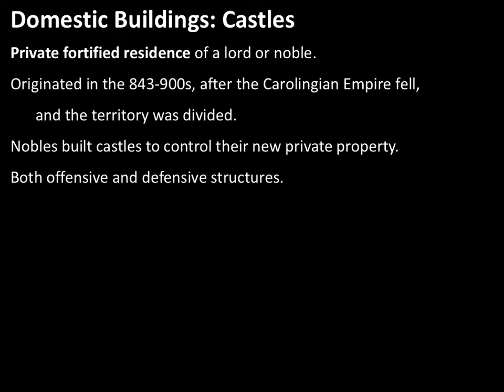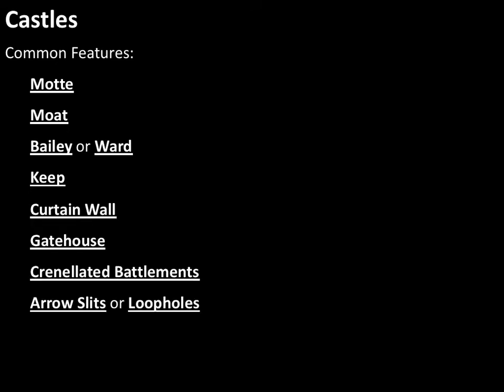These nobles built castles to help control the concept of private property — places they could defend themselves but also attack from. Common features of many castles include a motte and a moat — two different things. Castles usually feature a bailey or ward, a keep, a curtain wall, and eventually gatehouses, crenellated battlements, and arrow slits, also called loopholes.